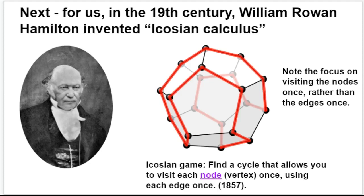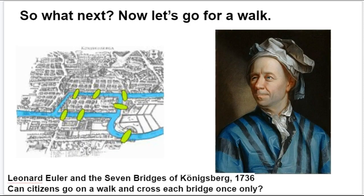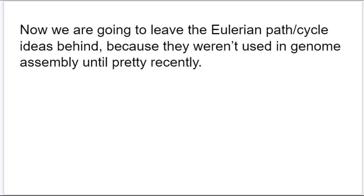We were just in the 1730s meeting Leonard Euler. If you look at this painting of him, you might notice he's squinting his right eye a little bit. He suffered from eye disease and went blind first in the right eye, then later completely blind in the left eye as well. Despite that, he remains one of the most prolific mathematicians in all of history. He had an incredibly positive attitude according to the literature. Let's leave him behind in the 1700s for now, because his ideas weren't used in genome assembly until actually pretty recently.